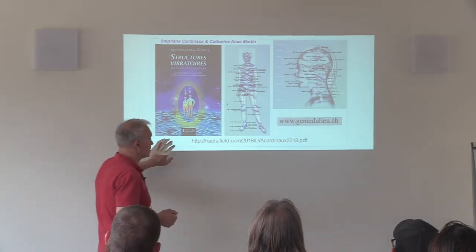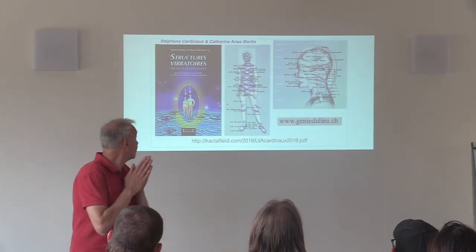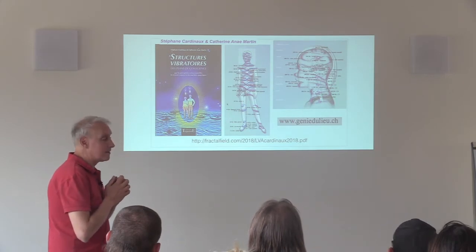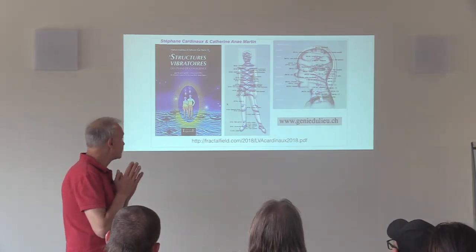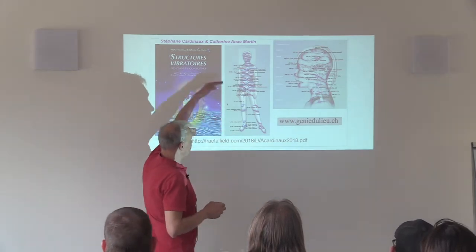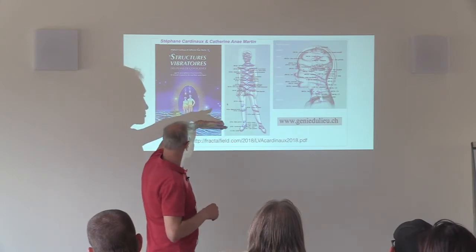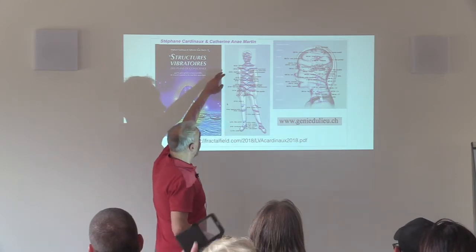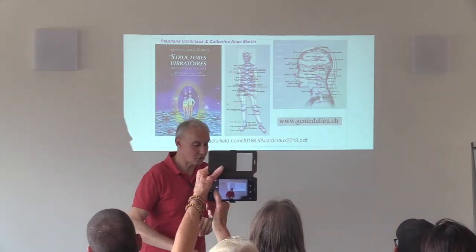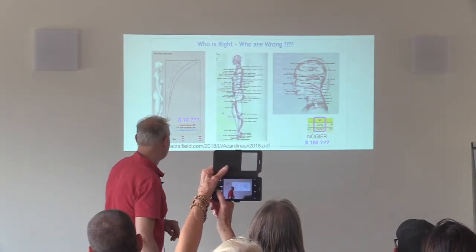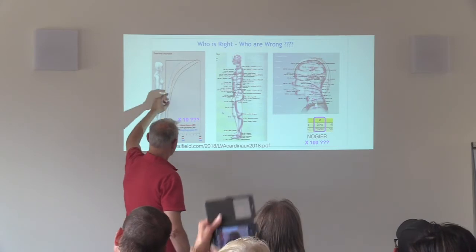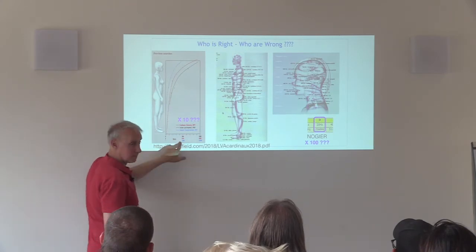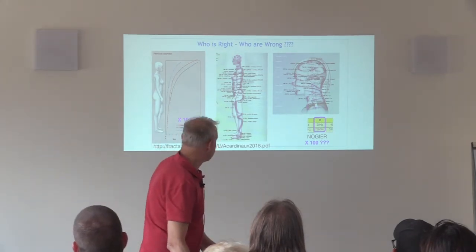We had the opportunity last year to have Stéphane Cardinot and Anne-Catherine Martin, who presented her latest book — they made really beautiful research. I found a new map which is quite close to the other one, from 100 Hz in the lower part of the body up to 800 Hz at the top. You can see: we have Tomatis, Stéphane compared the three curves, and there is a factor of 10 between the different researchers.